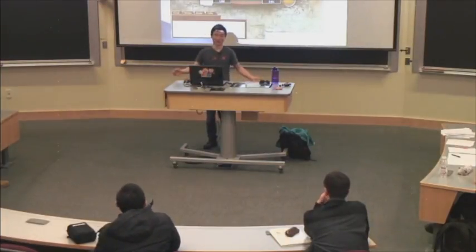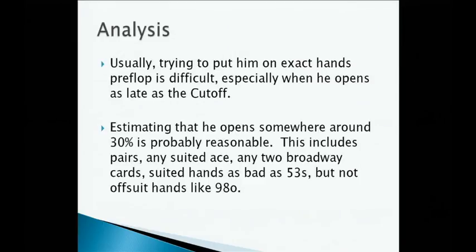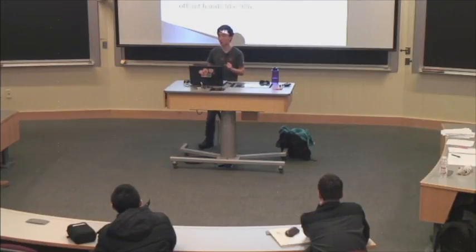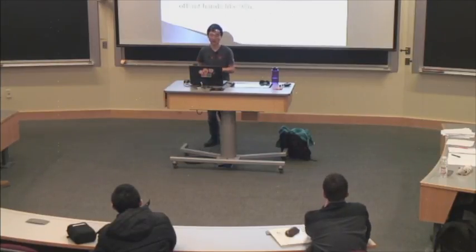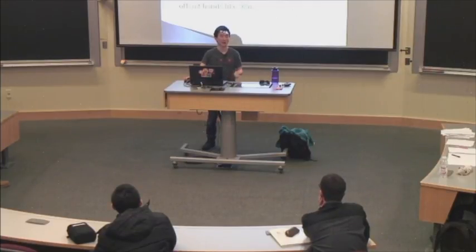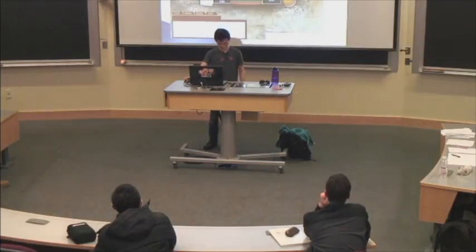First, preflop: what's our opponent's range? He's opening from the cutoff — let's say about 30% of hands, which is reasonable for an average player and consistent with the guidelines from the first lecture. This includes any pair, any suited ace, any two Broadway cards (10 and higher), and suited hands as bad as 5-3 suited. When 100 big blinds deep, 5-3 suited is a lot better than 10-8 offsuit. It does not include hands like 9-8 offsuit or King-7 offsuit, which are just terrible hands at 100 big blinds deep.